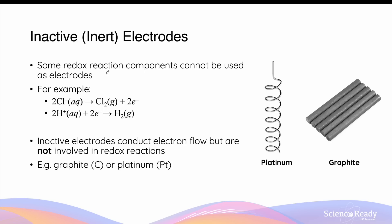Some redox reaction components and chemical species cannot be used as electrodes. For example, the oxidation of chloride ions in solution forms chlorine gas and electrons. Neither of these components are suitable for electrodes as they are not solids and they are not electrically conductive. The reduction of hydrogen ions to form hydrogen gas is another example whereby neither hydrogen ions (aqueous) nor hydrogen gas are good conductors of electricity. In galvanic cells involving these types of redox reactions, we need to use inactive or inert electrodes.